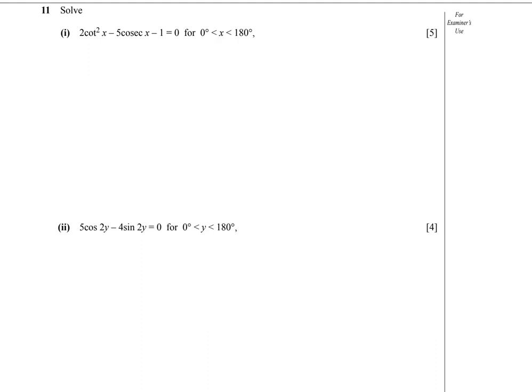In this question there are three trigonometric equations we have to solve to find the values of X, Y, and Z respectively. Let's start with the first one. Our first equation is 2cot²x minus 5cscx minus 1 equals zero.